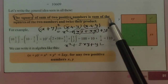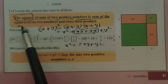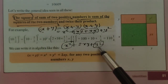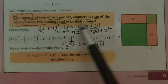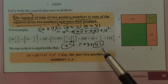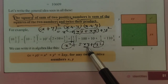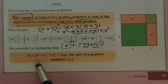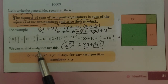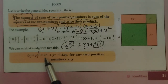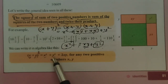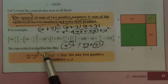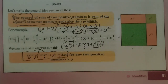This identity says the square of a sum of two positive numbers is the sum of the squares of the first two numbers — X square is the square of the first number and Y square is the square of the second number — plus twice their product. Here it is written as: X plus Y the whole square is equal to X square plus Y square plus 2XY. This is the second identity of this chapter.